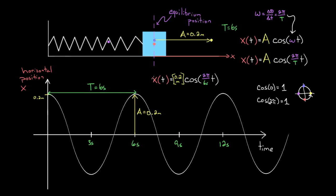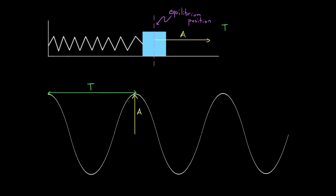That's what this function can do for you—that's how it can represent the motion of a simple harmonic oscillator. Once you get good at this, it's really easy.